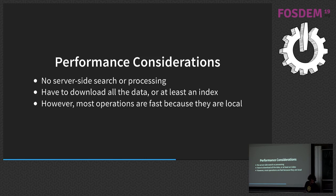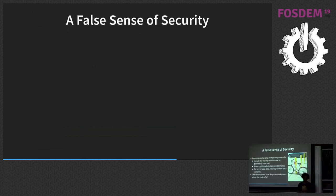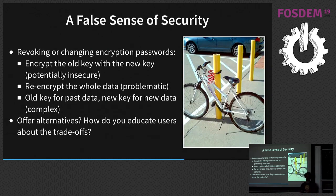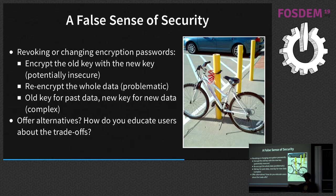On the bright side, because you're downloading everything locally, you can do offline work and everything is much faster for local operations. But you also need to watch out for a false sense of security. Revoking or changing encryption passwords seems trivial but it's not. One way is to encrypt the old key with the new key — that's okay if you haven't been hacked. The problem is that everyone who ever had access to your encryption key will still have it: if you shared a journal and revoked access, or if you were hacked and changed the password, that attacker could still have the old encryption key.